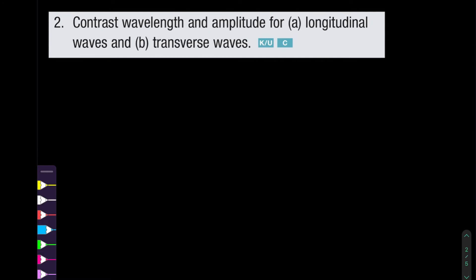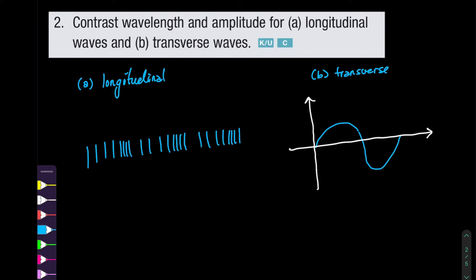For question two, they want us to contrast wavelength and amplitude for longitudinal waves and transverse waves. Looking at transverse waves first — those are easier — we have the vertical displacement Y as a function of X. The wavelength is just a full wave cycle: it tells you the distance along the medium that it takes for one cycle to occupy at an instant in time.